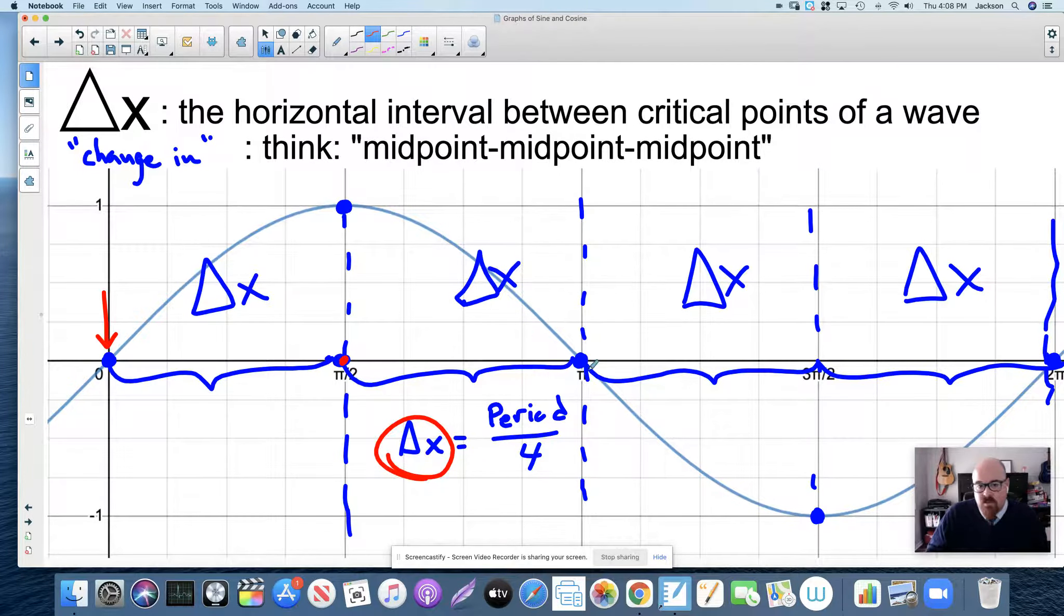If we knew it was a max, we'd put it up here and we'd put them in an intercept. So understanding that a period can be broken into four intervals, and there's some predictability in what you're going to see with that. You get to a critical point at the end of each one of those intervals that we call delta x.